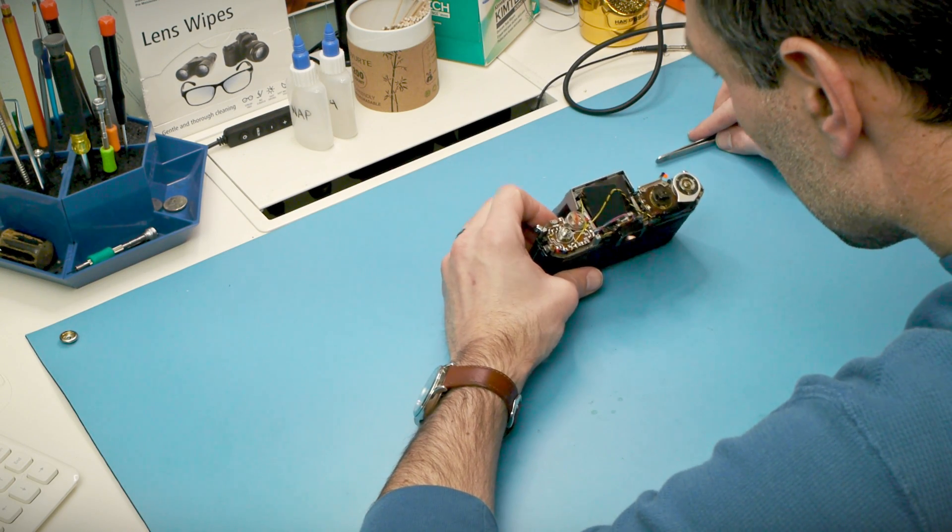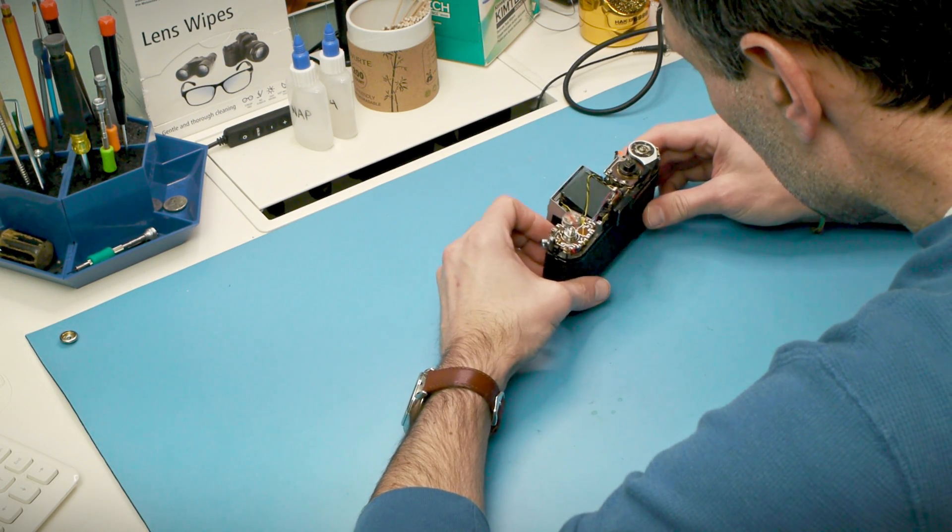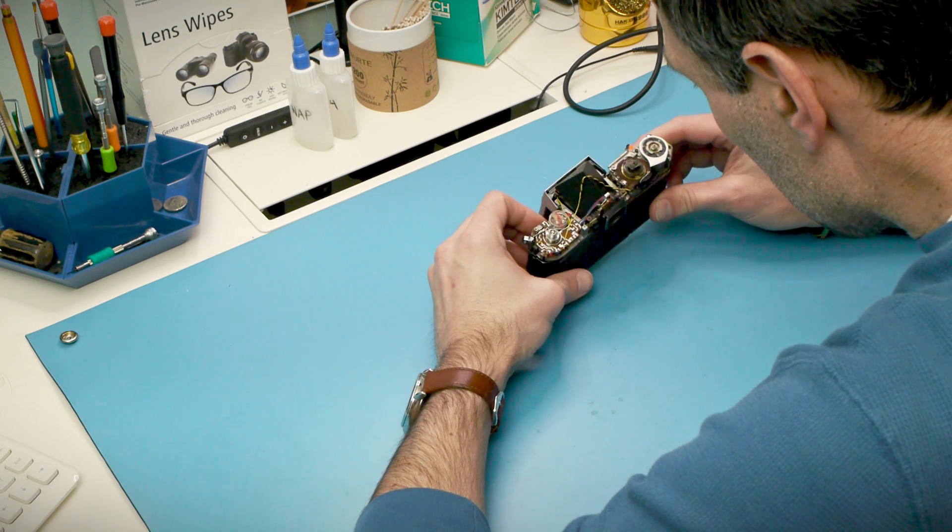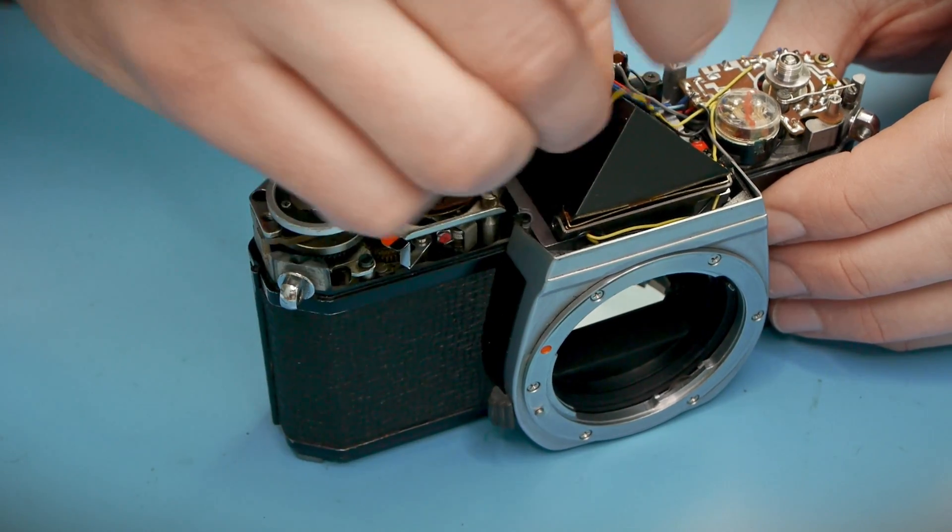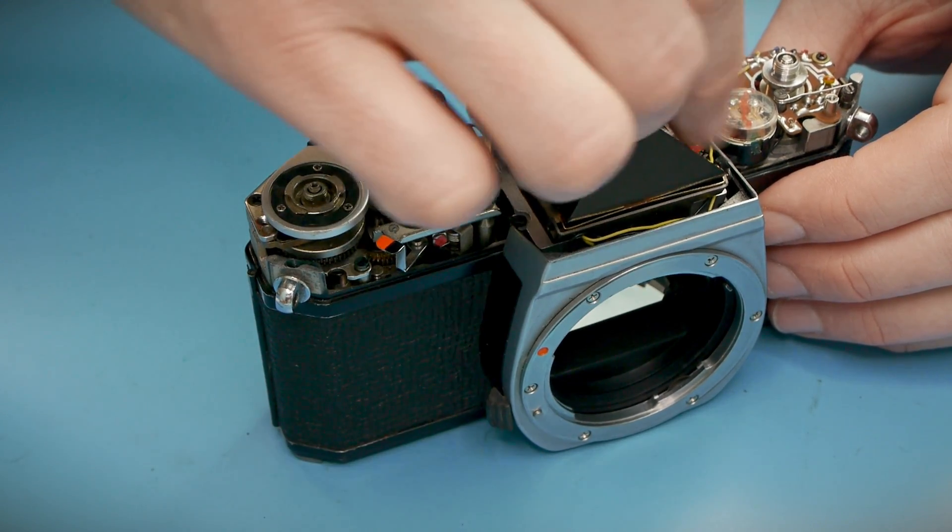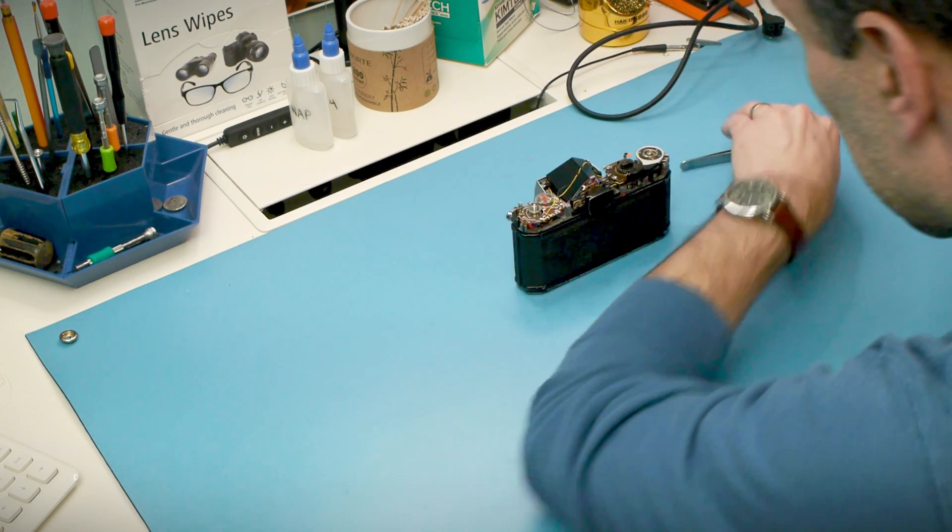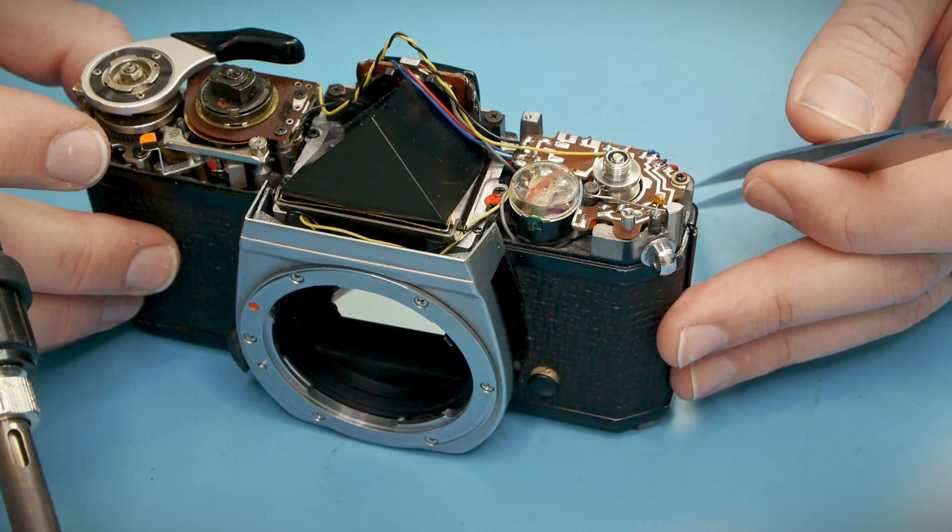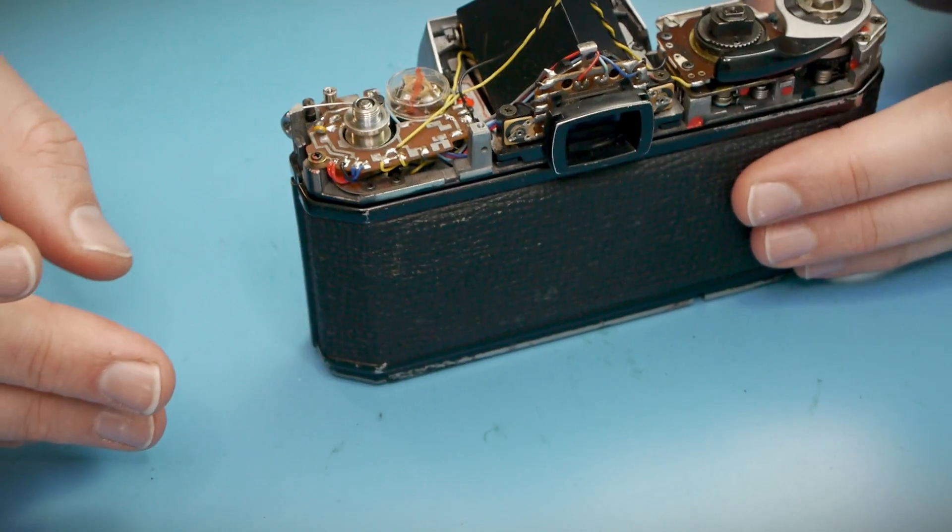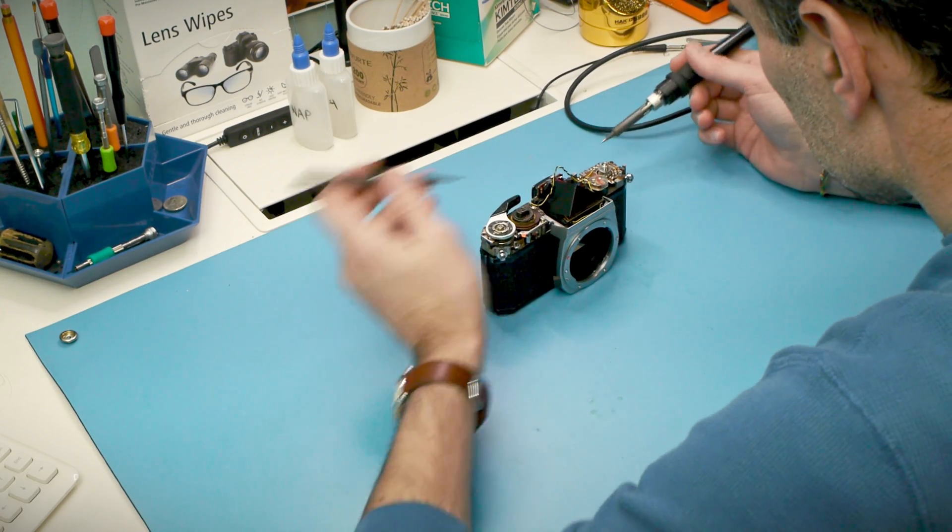I feel like a quick overview of the meter might be helpful to understand the disassembly. The meter of the K1000 is very simple and it has four main components. There are two variable resistors, one under the shutter speed dial to communicate the shutter speed and one around the lens mount to read the aperture.